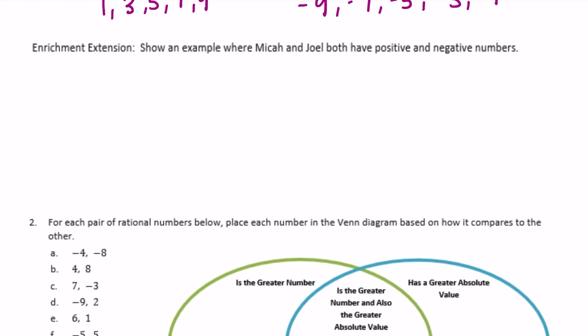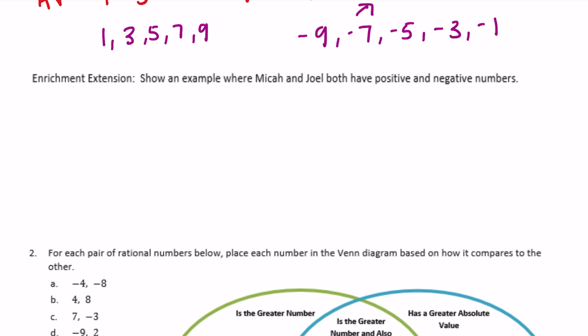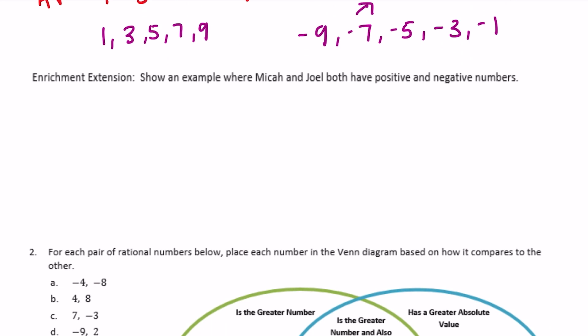Enrichment extension: show an example where Micah and Joel both have positive and negative numbers. So we're taking it a little bit further. I can't just say Joel can have negative numbers and Micah will have positive numbers — we need to mix it up.